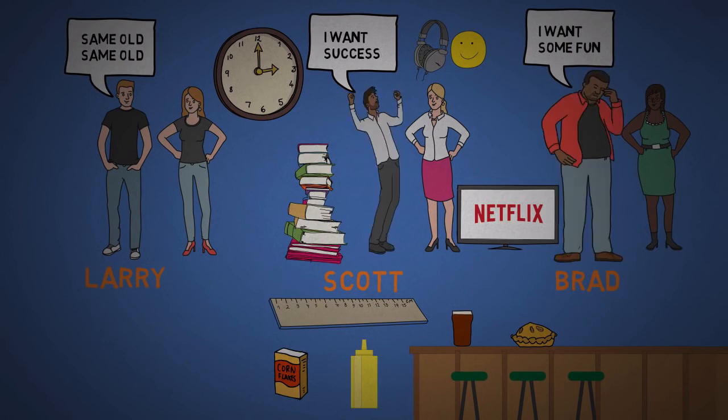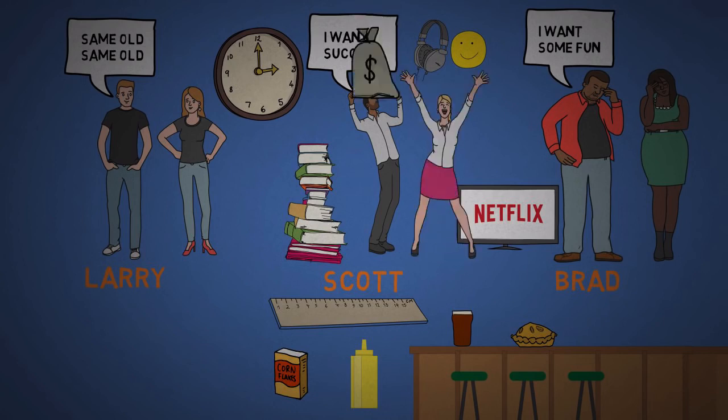Brad is now fat, has less confidence, and has a lower level of happiness. While Scott is now trim, has a good marriage, and even got a promotion at work. Larry represents most people and hasn't really changed.